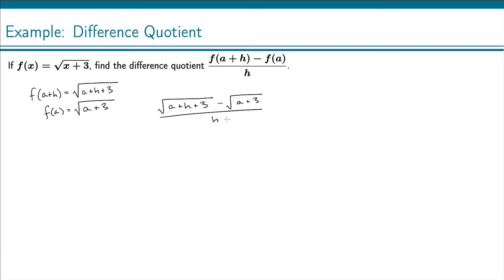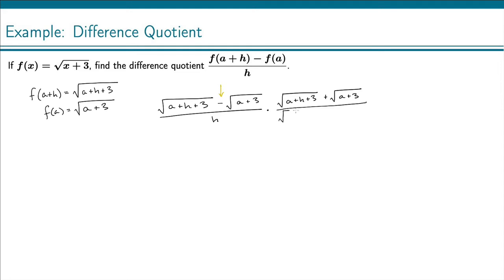This is the difference quotient, but we'd like to simplify it if we can. We don't like all these square roots dividing by an h. What we're going to do is multiply by the conjugate of the numerator. The conjugate of an expression with two terms is the same two terms but with the sign in between changed. So this minus becomes a plus, and we multiply by the square root of a plus h plus 3 plus the square root of a plus 3. We can't just multiply by that alone, so we put the same expression in the denominator to keep the value at 1.